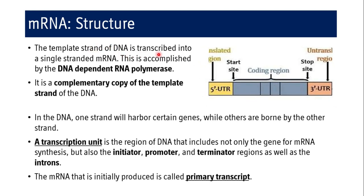The template strand of DNA is transcribed into a single-stranded mRNA, and this is accomplished by DNA-dependent RNA polymerase, which synthesizes RNA depending on the template strand of DNA — producing a complementary copy of that template strand. In DNA, one strand harbors certain genes while others are borne by the other strand. A transcription unit is the region of DNA that includes not only the gene for mRNA synthesis but also the initiator, promoter, and terminator regions, as well as the introns. The mRNA initially produced is called the primary transcript.